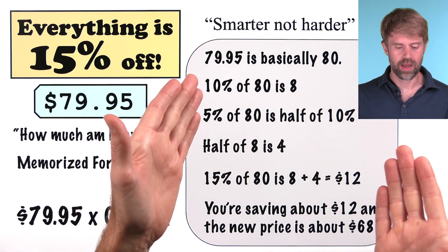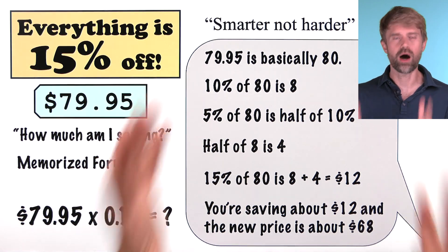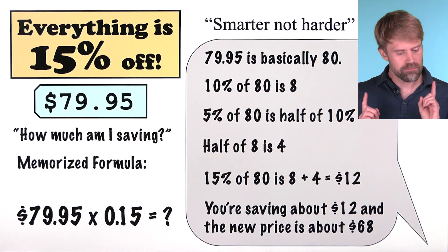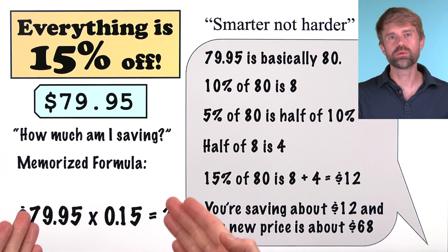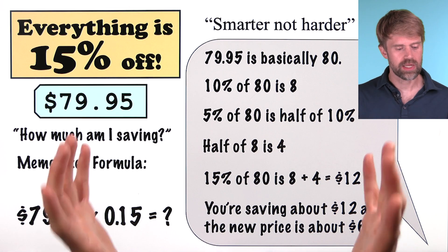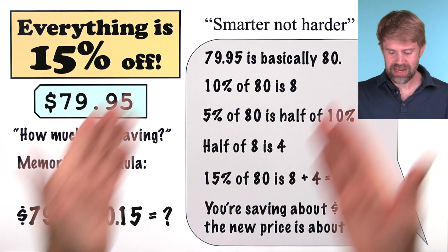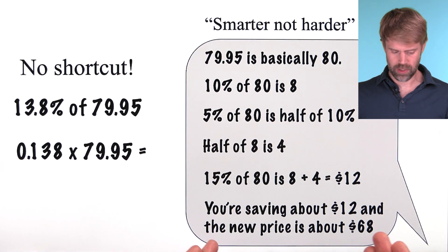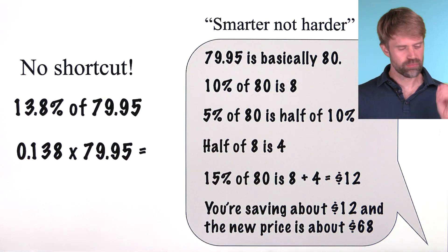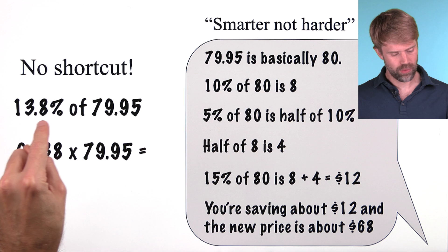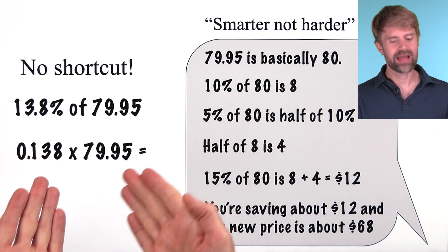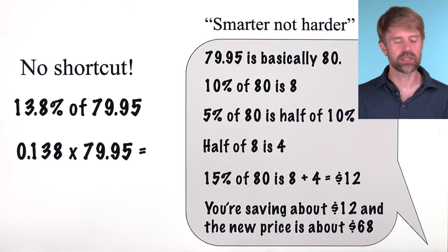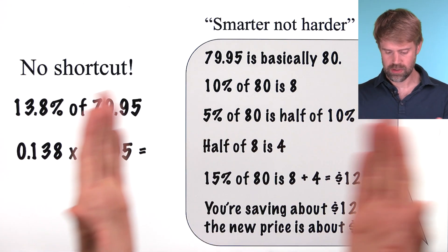Now, this would blow me away. And here's what it shows. If you really understand something, you can see the shortcuts and the other opportunities. The memorized formula isn't your only tool. When you really understand something, you realize you might have other options. And, of course, you also know when you can use a shortcut and when you can't. If you need to precisely calculate 13.8% of $79.95, you're going to have to use this formula and do some serious math. But real understanding means that you know when you can use each approach.